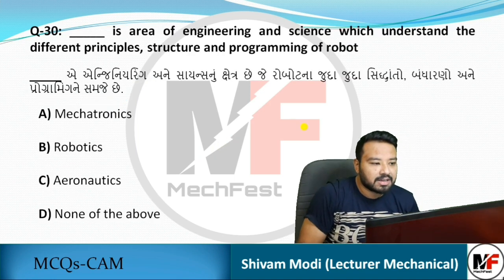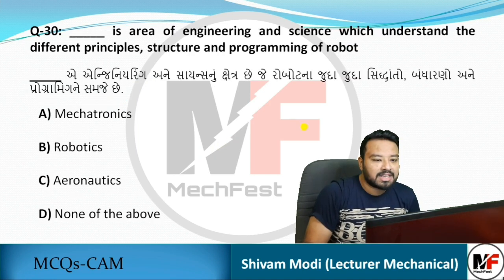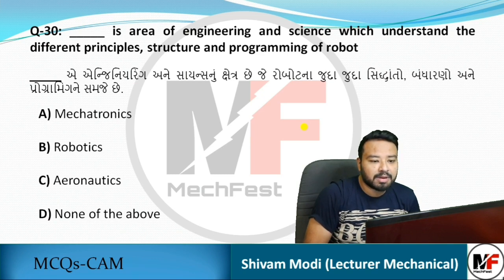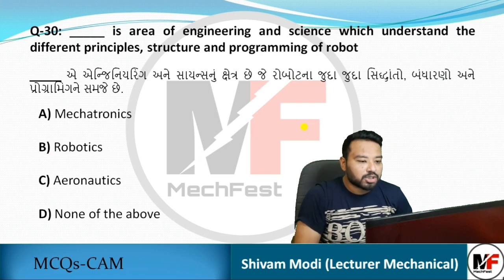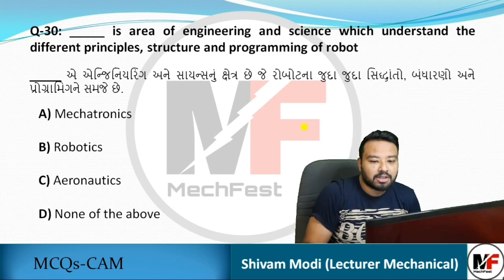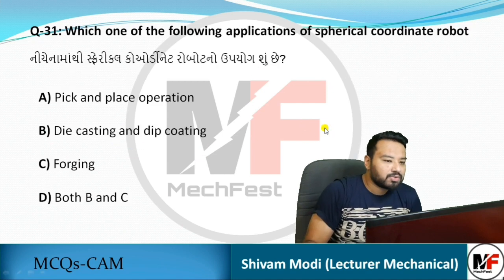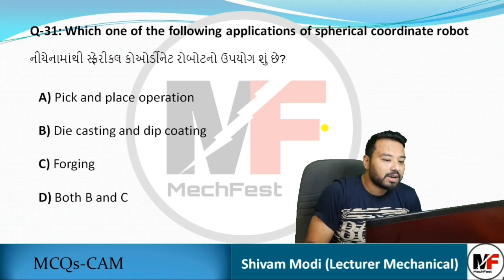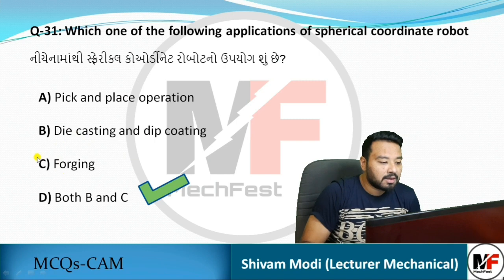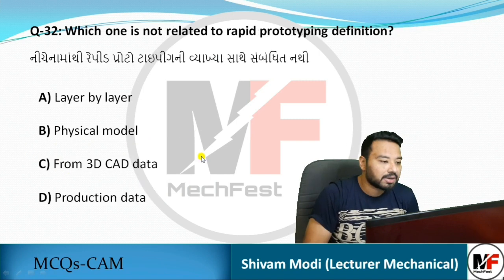Next question: what is the area of engineering and science that studies the different principles, structure, and programming of robots? The answer is robotics. Next question: what is an application of spherical coordinate robots? The answer is both B and C — die casting, deep coating, and forging.